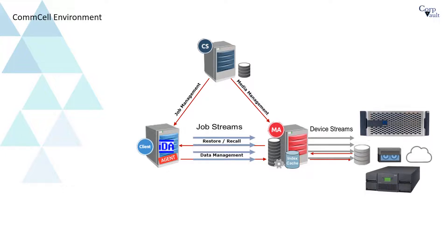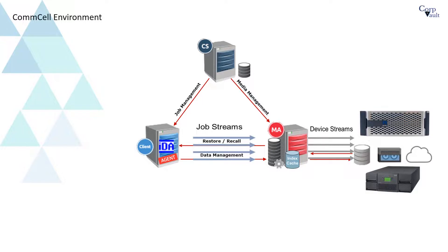Whether performing local backups to a media agent installed on the same system, or over the network to a media agent installed on a different system, the data stream processes remain the same. When provided with sufficient resources — for example, bandwidth, CPU, disk I/O — a single data stream can stream multiple storage devices across a network at optimum speed. Simultaneous data streams can be run from one or more data sources to one or more media agents at the same time. The data stream will make use of all available bandwidth, unless throttled back using controls built into the CommVault client software.